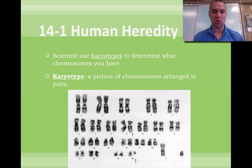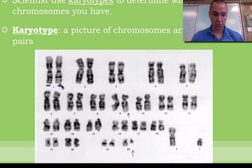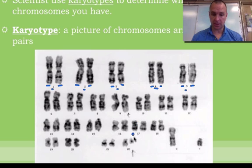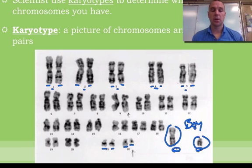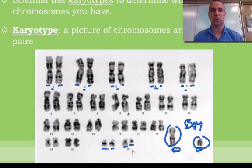If you notice down here on this chart of the karyotype, there are two number 1s, two number 2s, two number 3s, two number 4s, two number 5s, all the way down until you've got two number 22s, two number 21s. Here's an X and here's a Y — this is actually a boy. If you counted up all these chromosomes, there are 46, which is what we would expect. There are 23 pairs — 23 times 2 makes 46.